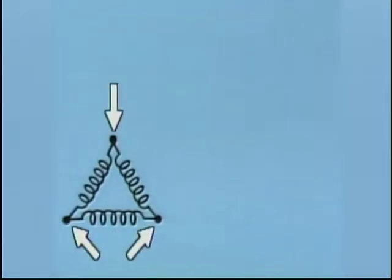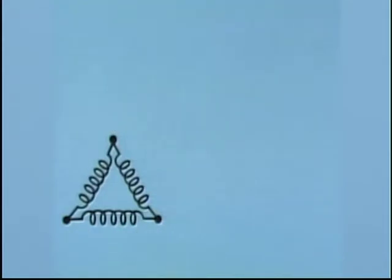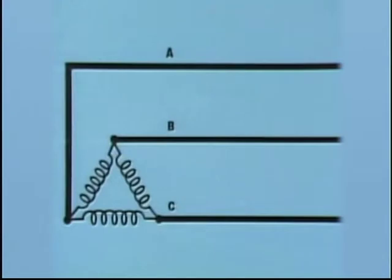The ends of each winding are connected to ends of the other two windings so that all three windings are interconnected. Each phase of a primary delta distribution circuit begins at the point where two windings are connected together.